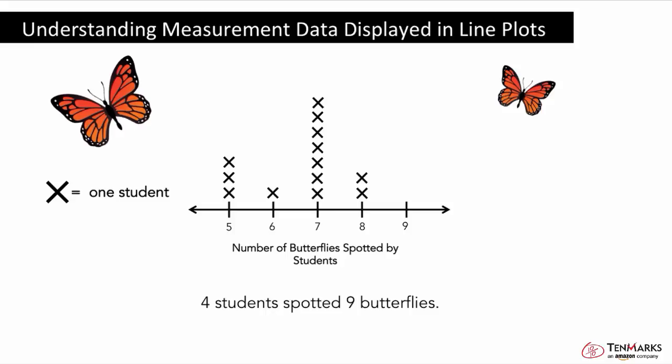If 4 students spotted 9 butterflies, how can we fill the line plot? Well, students spotted 9 butterflies, so we need to look at the tick mark with 9. There are 4 students and 1 X represents 1 person, so we need 1, 2, 3, 4 X's above the 9.